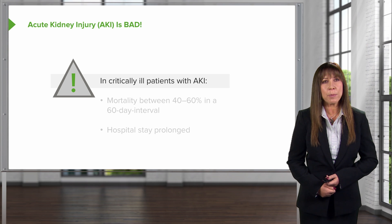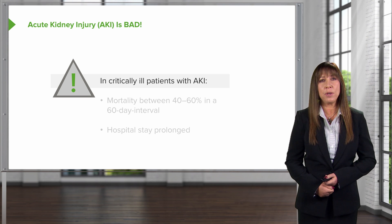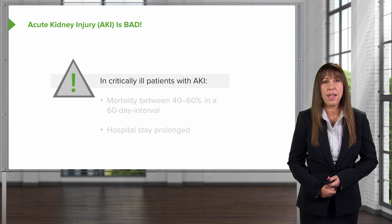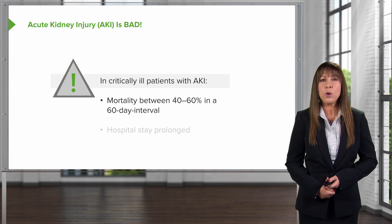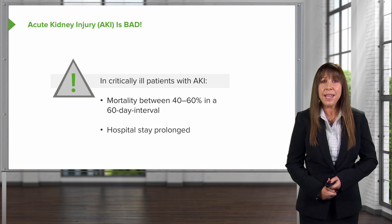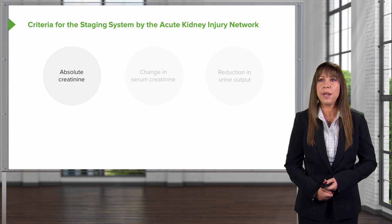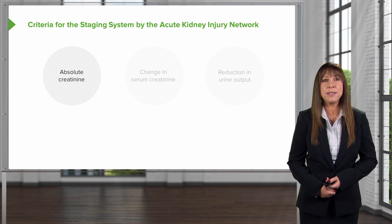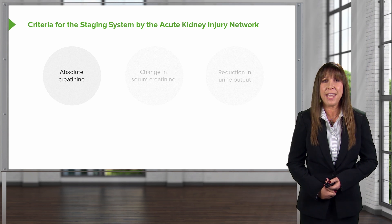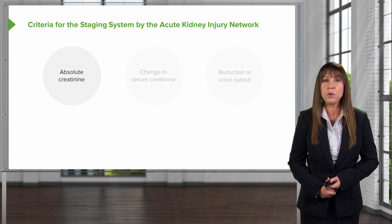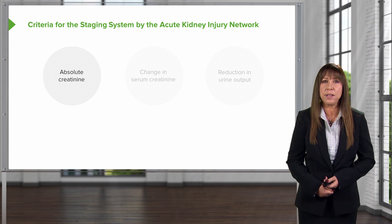If you remember nothing else from this lecture, remember that acute kidney injury is significant. In critically ill patients who develop AKI, mortality is increased between 40% to 60% at 60 days, and hospital stay is prolonged. Part of the reason care has been so difficult is that it took a long time to develop criteria to define and stage AKI in order to develop therapeutic targets in this population.